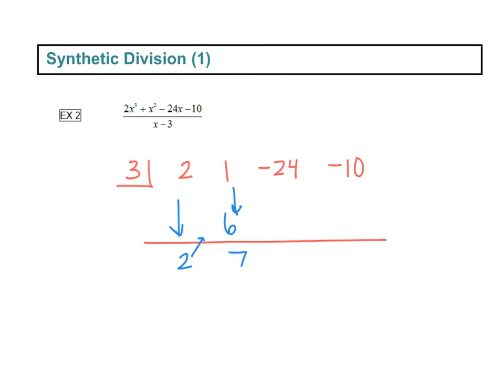Then we multiply. 7 times 3 goes up here, is 21, and then we add down. Negative 24 plus 21 is a negative 3. And then we multiply again. Negative 3 times 3 is negative 9. That goes up here, negative 9. And then we add down for negative 19.